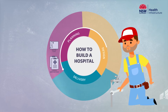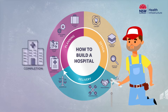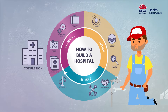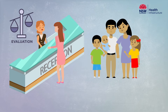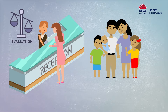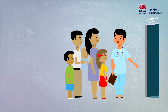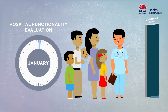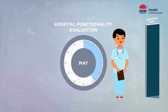Once construction is complete, we begin the commissioning phase. This involves checking and testing of all components and systems of the new facility. Staff orientation and training also occurs to ensure everyone is prepared to welcome the first patients through the door. Once staff and patients have moved in, Health Infrastructure continues to evaluate and assess the functionality of the new facility for several months. This process also helps to inform our future hospital projects.